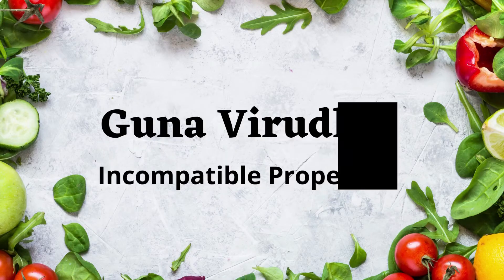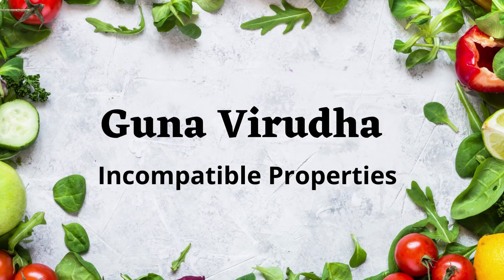The first factor that causes incompatibility in food is guna virutha. Guna means property and virutha means opposite, so when you combine two foods that have conflicting properties, they come together to form an incompatible combination called guna virutha.